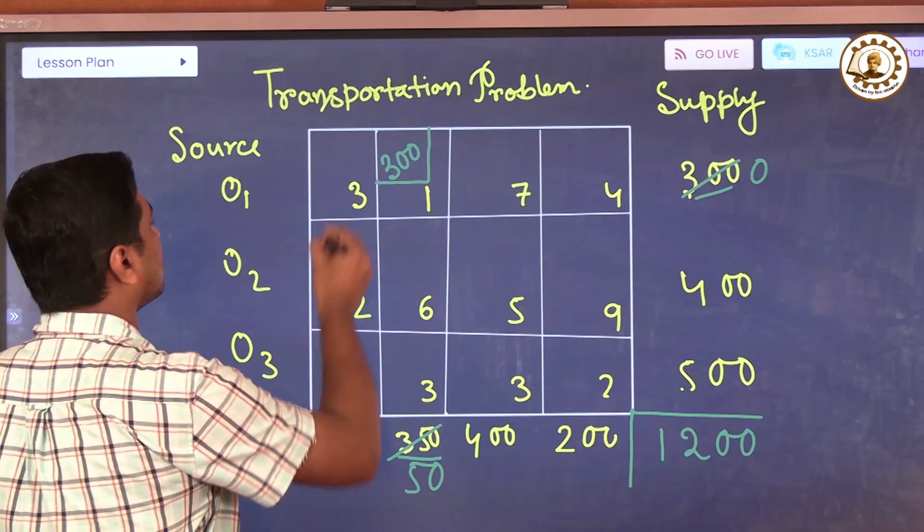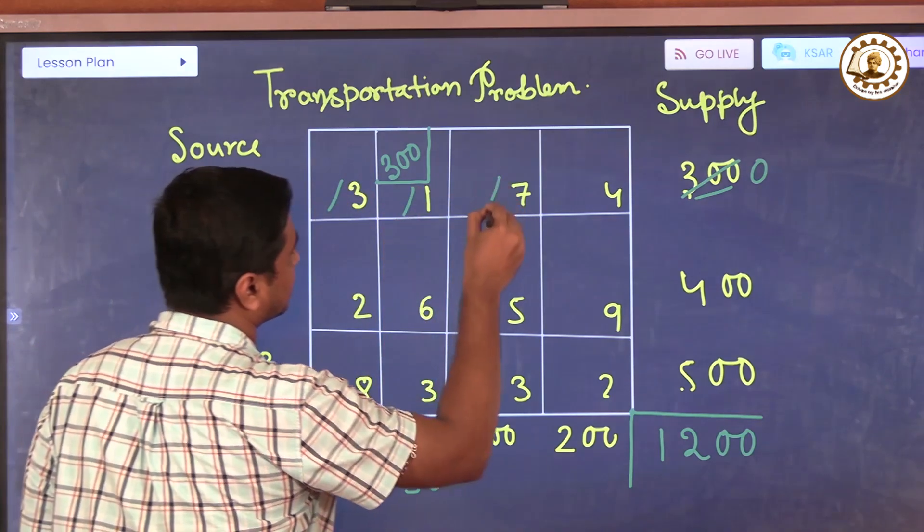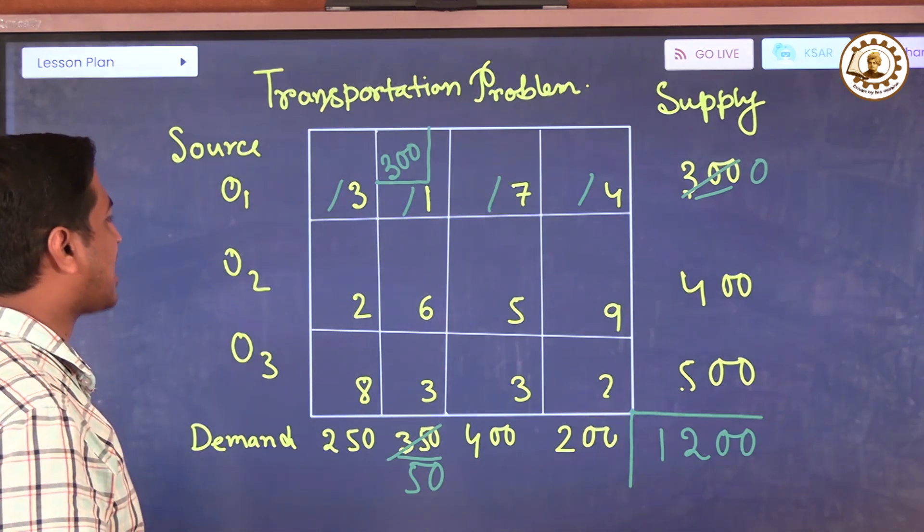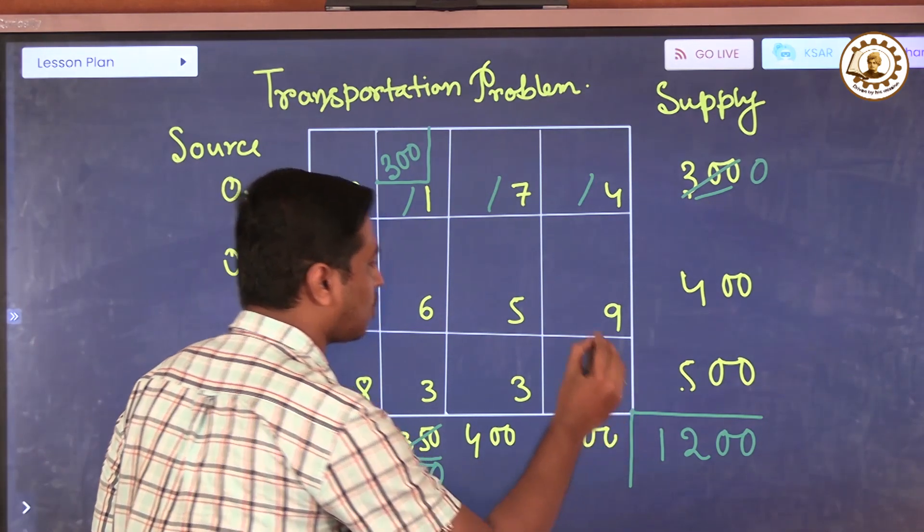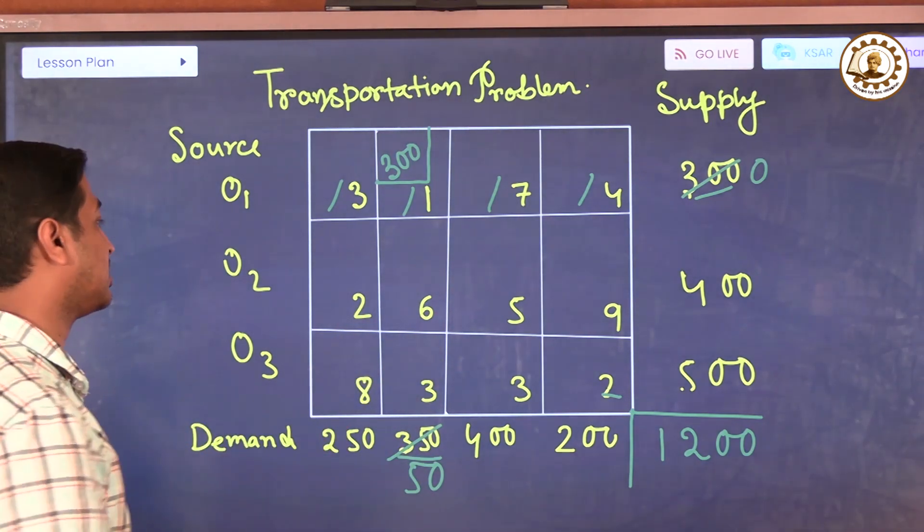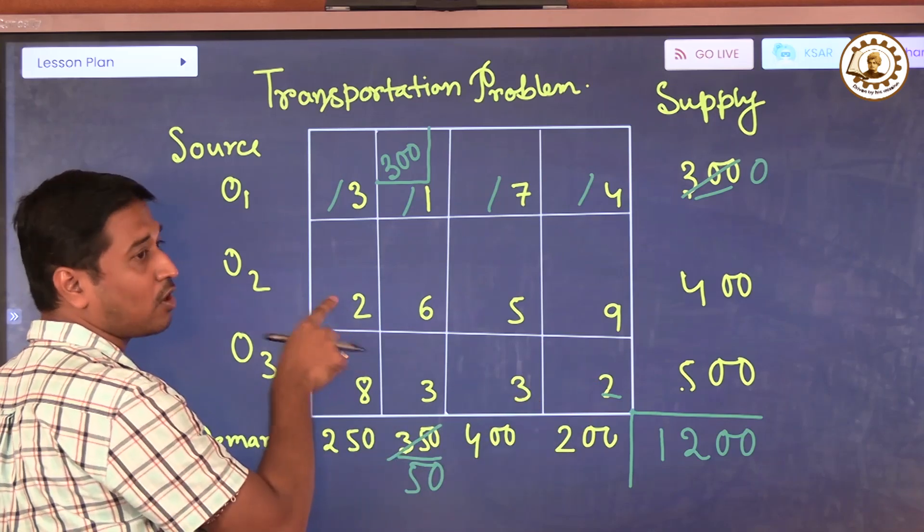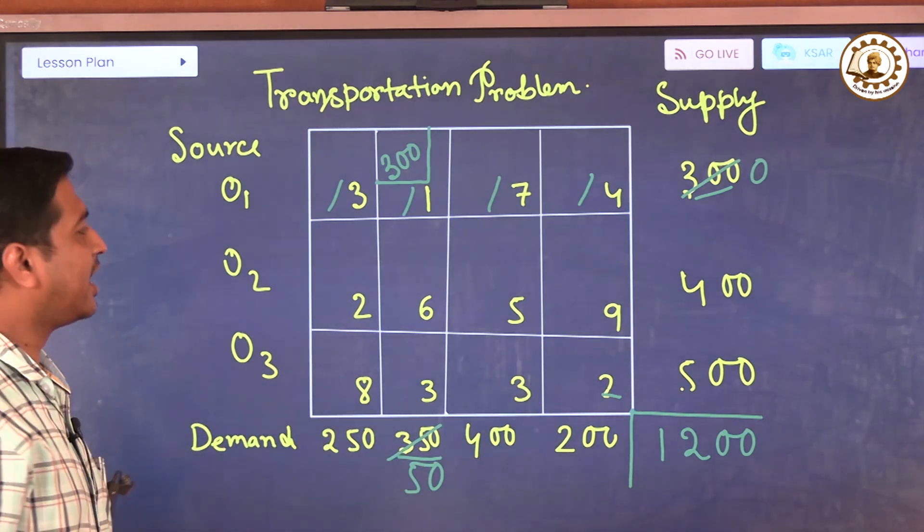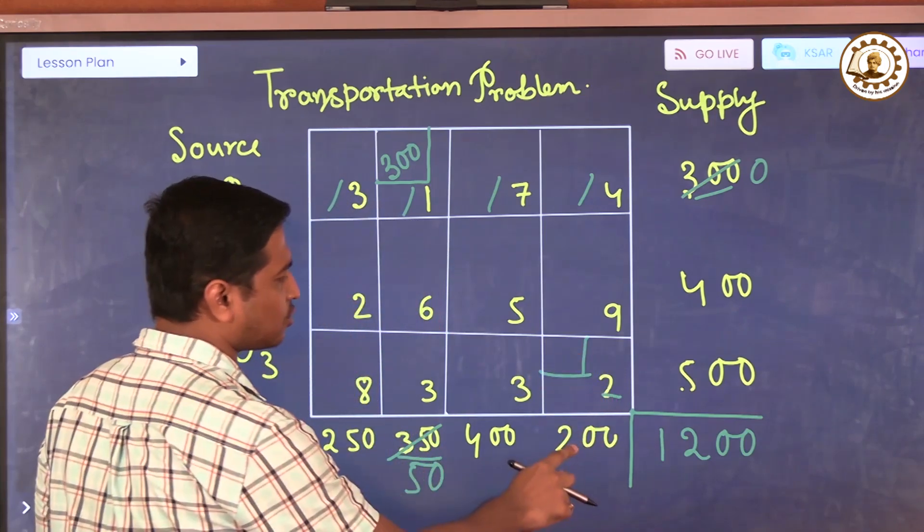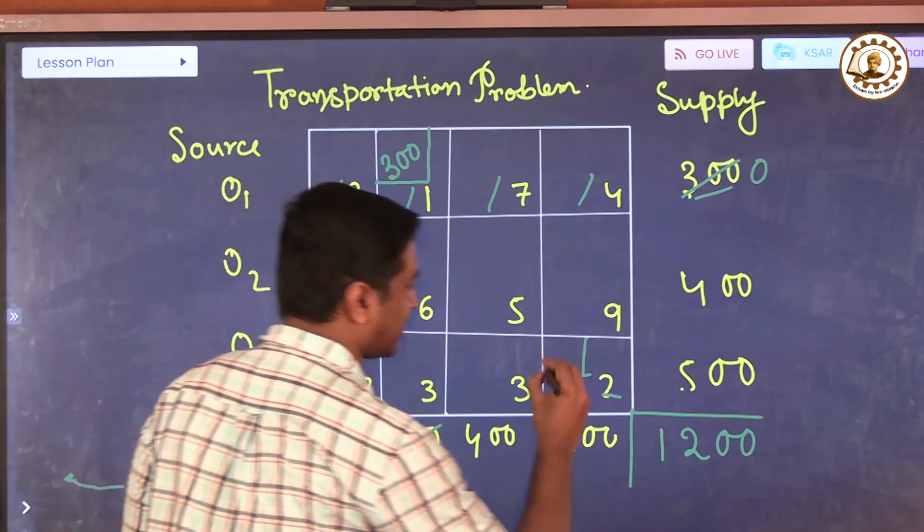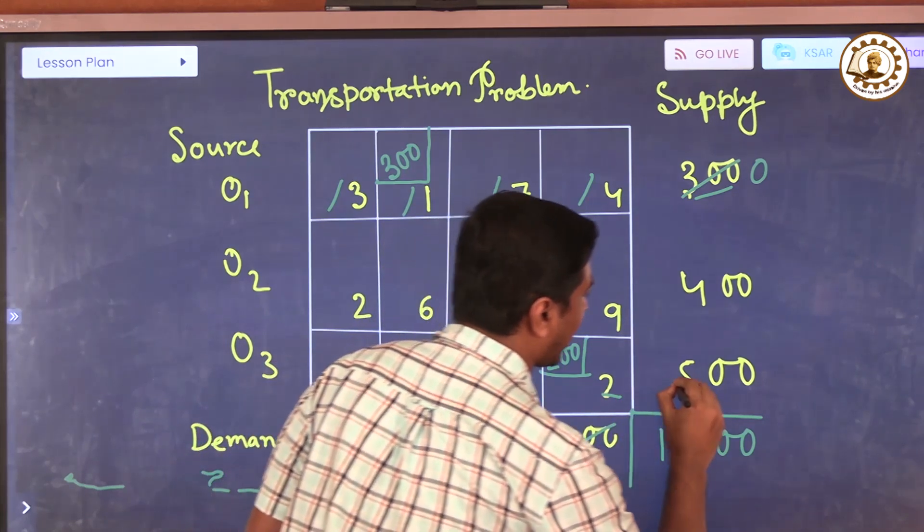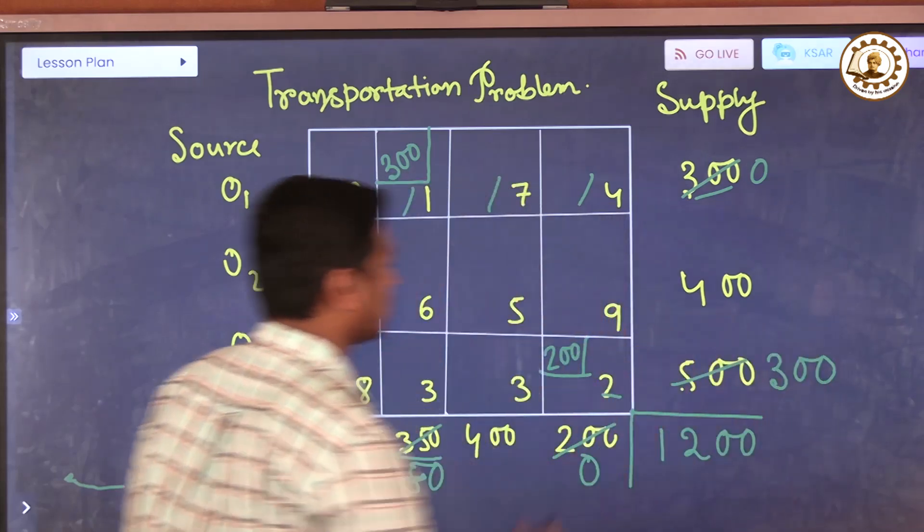Now we can delete this box. Now search where the transportation cost is minimized. We can see there are two allocated cells where the transportation cost is minimized, that is two here and here also two. You can take any one of them. First I take these two. This is 200 and this is 500. So 200, this is zero and remaining is 300.